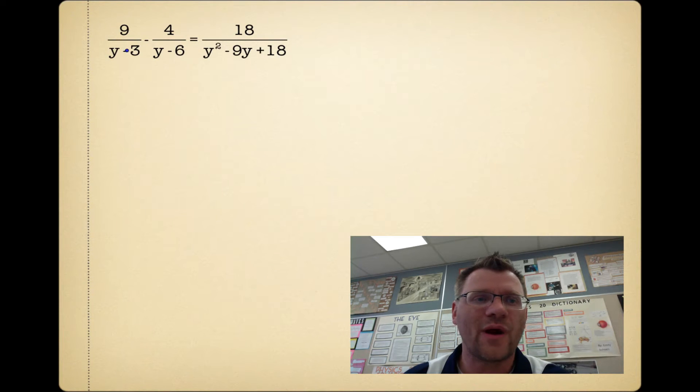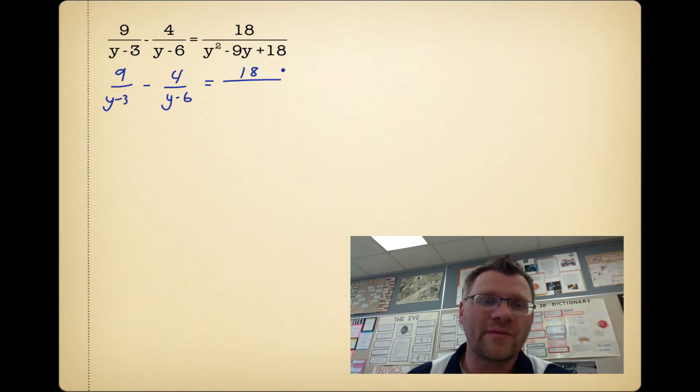So we have 9/(y-3) minus 4/(y-6) equals 18/(y²-9y+18). Your first step at all times is going to be that you want to factor anything that isn't already factored. So we have y²-9y+18, we're looking for two things that multiply to 18 but add to negative 9, and that's y-3 and y-6.